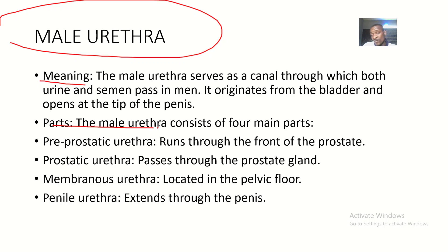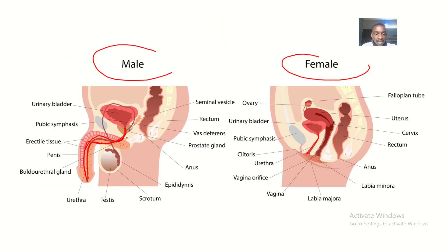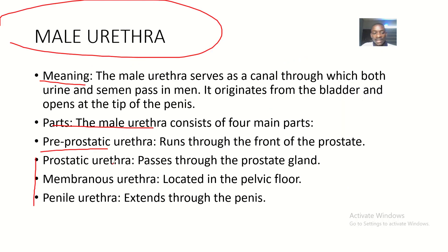There are four main parts of the male urethra, though in many other contexts you may see only three parts mentioned. The pre-prostatic urethra runs in front of the prostate gland. The prostatic urethra passes through the prostate gland.